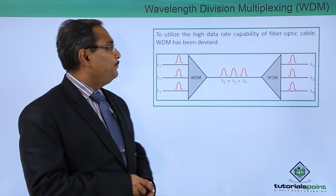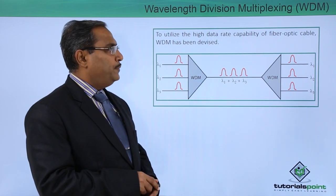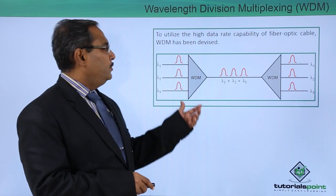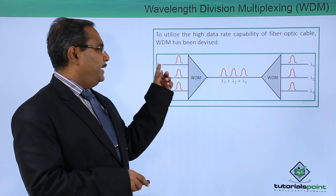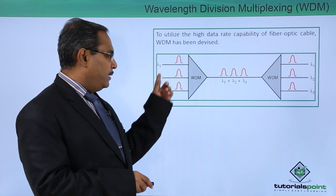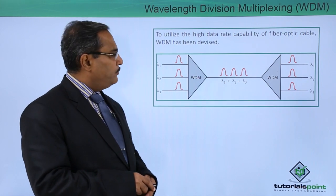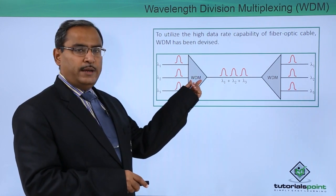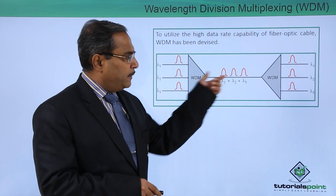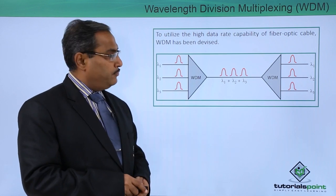Let us discuss with this diagram. To utilize the high data rate capability of fiber optic cable, WDM has been devised. Here we are having three different optical energies with respective wavelengths — lambda 1, lambda 2, and lambda 3. This WDM will enable them to combine and travel together in the form of lambda 1 plus lambda 2 plus lambda 3.